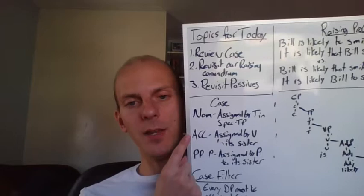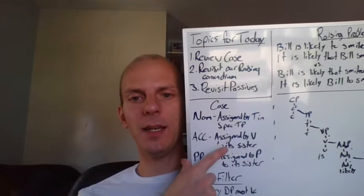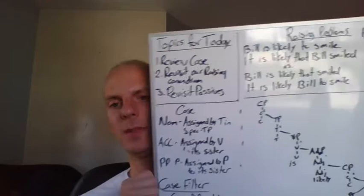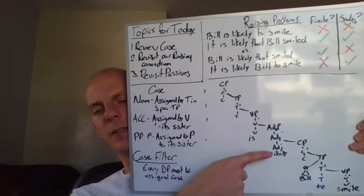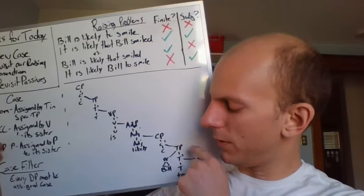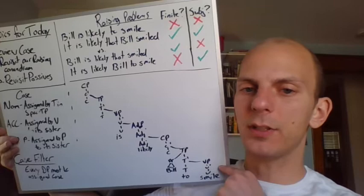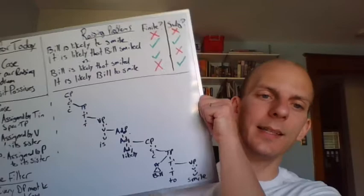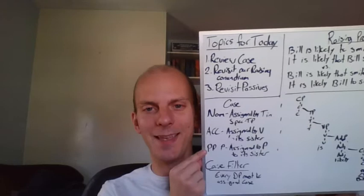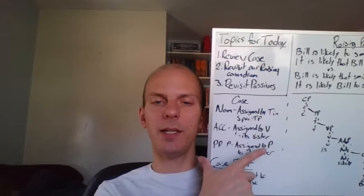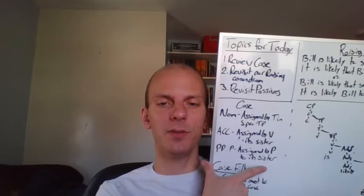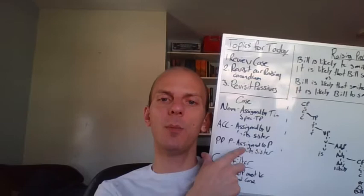Nominative case is things like 'he' and 'she,' as opposed to accusative case, which is things like 'her' and 'him,' which is assigned by V to its sister position. So if we look over here, we've got a verb phrase all the way down here. This one doesn't have a complement, but if it did, that's the position it would be assigned in — to the complement of this V structure, the sister of the V head, and it's assigned by the V. And lastly, we have prepositional case, which is assigned by a preposition — assigned by P — and it's assigned to its sister, its complement, very similarly to V assigning it to its sister.